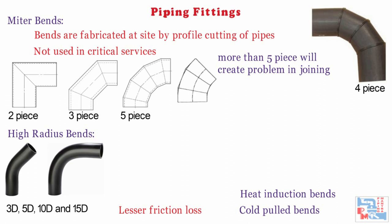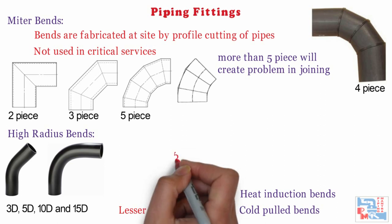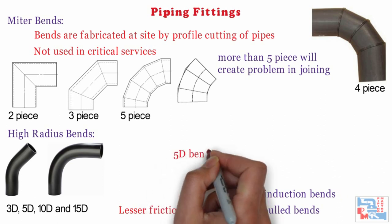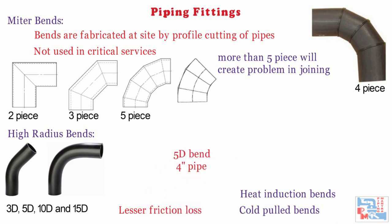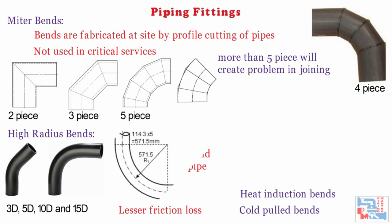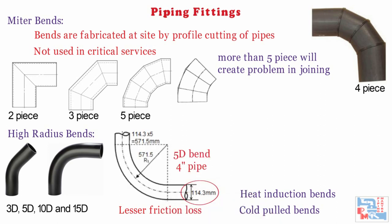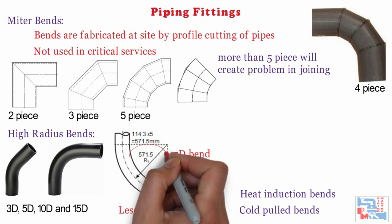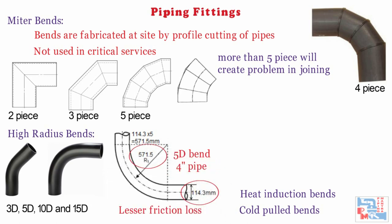Let's understand this better using an example. Let's calculate the radius of a 5D bend for a 4-inch pipe. It would be 5 times the OD of the pipe, which is 114.3 mm for a 4-inch pipe. So the radius would be 114.3 × 5, that is 571.5 mm.